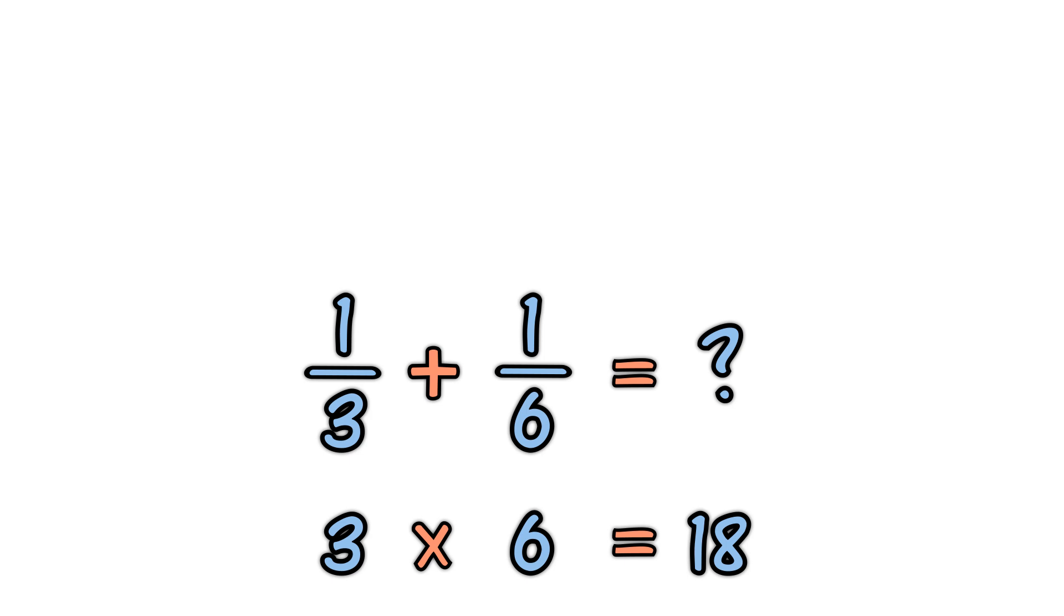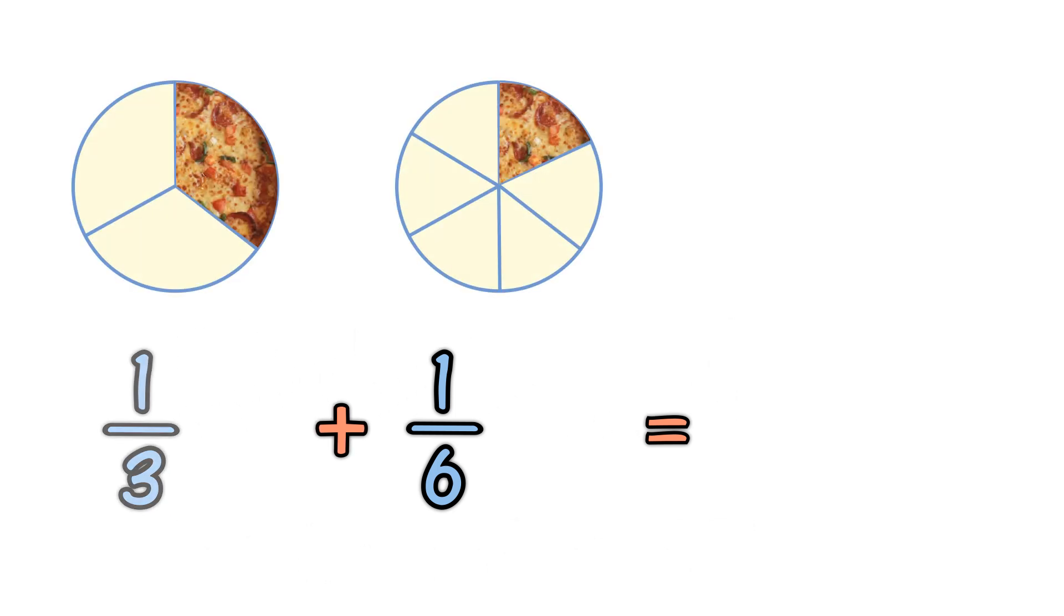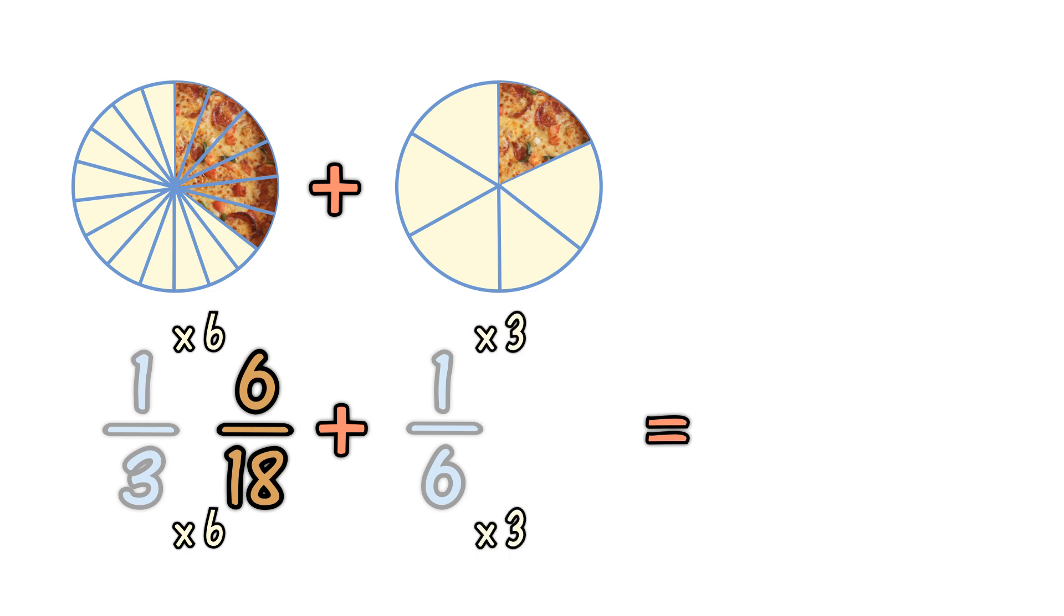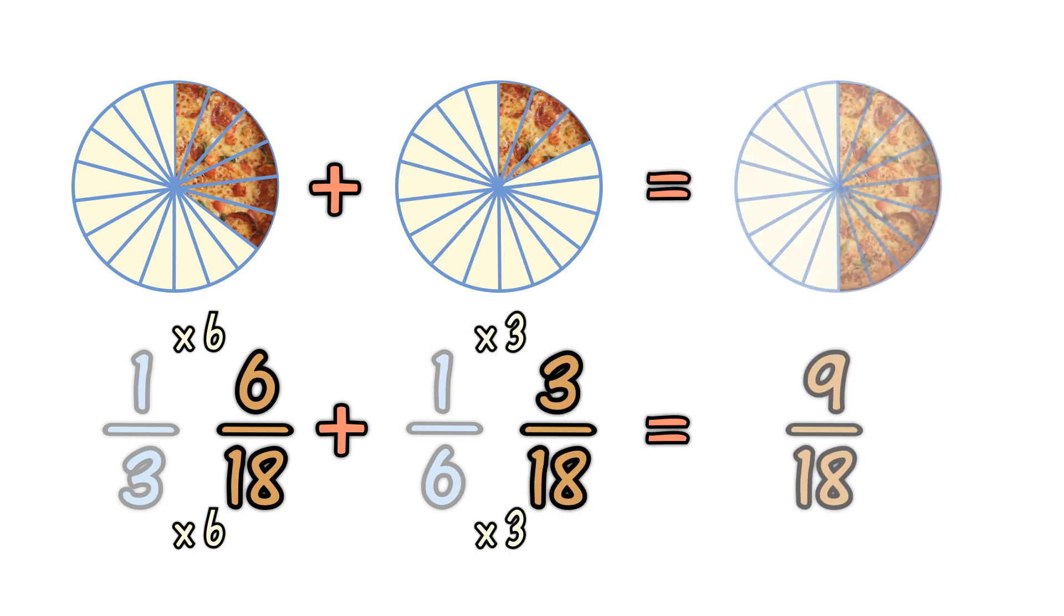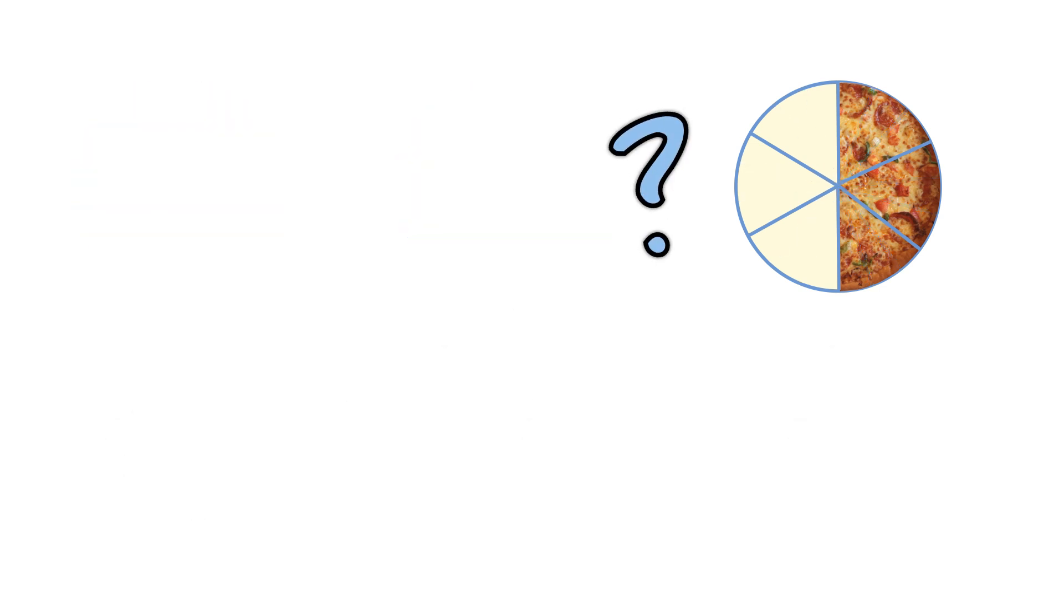The pizzas now look like this. Six-eighteenths plus three-eighteenths equals nine-eighteenths. That's all fine, but eighteen's a lot of slices. Can you do it with fewer slices? Here's how to find out.